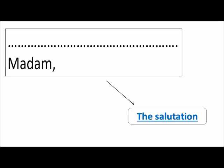After writing the address, you will leave a line. After leaving a line, you will write 'Madam comma.' This part of the application is called the salutation. Here you write 'sir' or 'madam' because you don't have a friendly relation with the person and don't know him or her very well. It is also written at the left-hand side and followed by a comma.